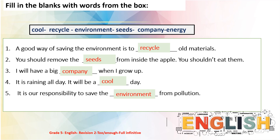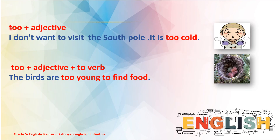Let's move to the second exercise. This structure was covered in module nine. We use 'too' plus adjective — for example: 'I don't want to visit the South Pole, it is too cold.' We also use 'too' plus adjective plus 'to' plus verb when we talk about something we cannot do — for example: 'The birds are too young to find food.'